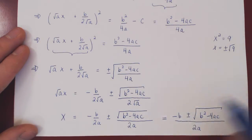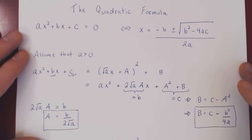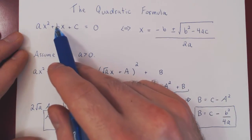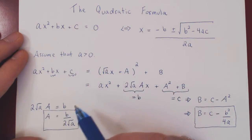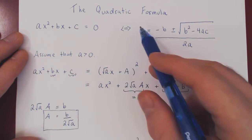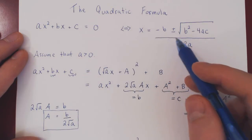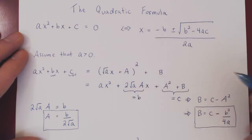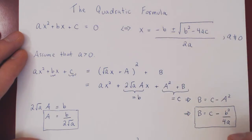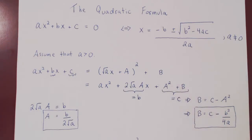And this is the well-known quadratic formula. If ax squared plus bx plus c equals 0 and a is non-zero, then x equals negative b plus or minus the square root of b squared minus 4ac, all over 2a. And this is how you derive the famous quadratic formula.